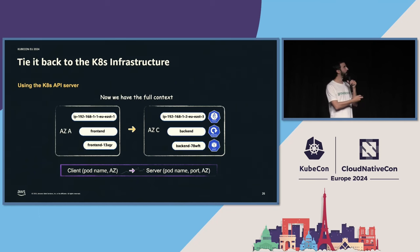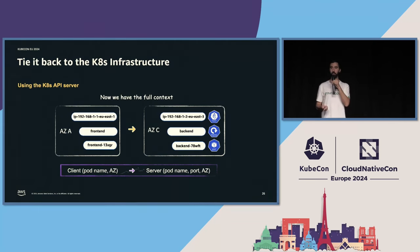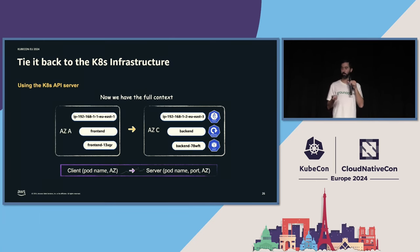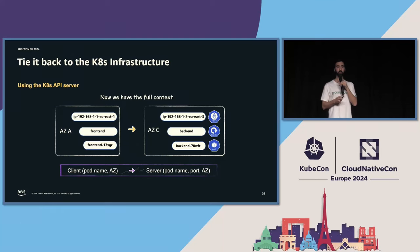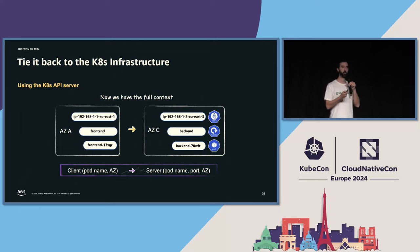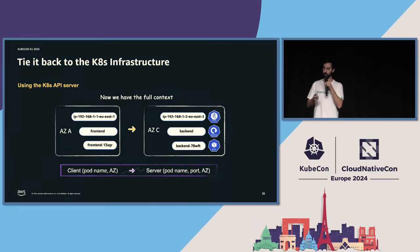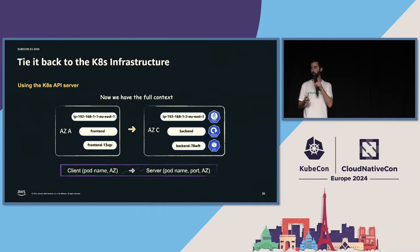We have the full context: a frontend pod on one end communicating to a backend pod on the other, both belonging to specific deployments called frontend or backend, and we know the node they're running on and therefore the AZ. We moved to a description measuring a counter-byte metric of communication between client pod name and AZ on one end to server pod name, port, and AZ on the other.